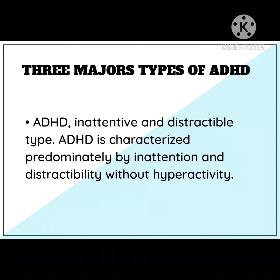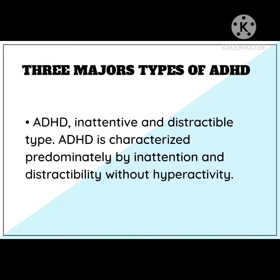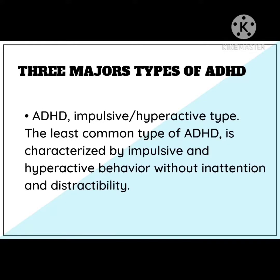There are 3 major types of ADHD. First is ADHD inattentive and distractible type, characterized predominantly by inattention and distractibility without hyperactivity. In the inattentive presentation, it is hard for an individual to organize or finish a task, to pay attention to details, or follow instructions or conversation. The person is easily distracted or forgets details of daily routines.